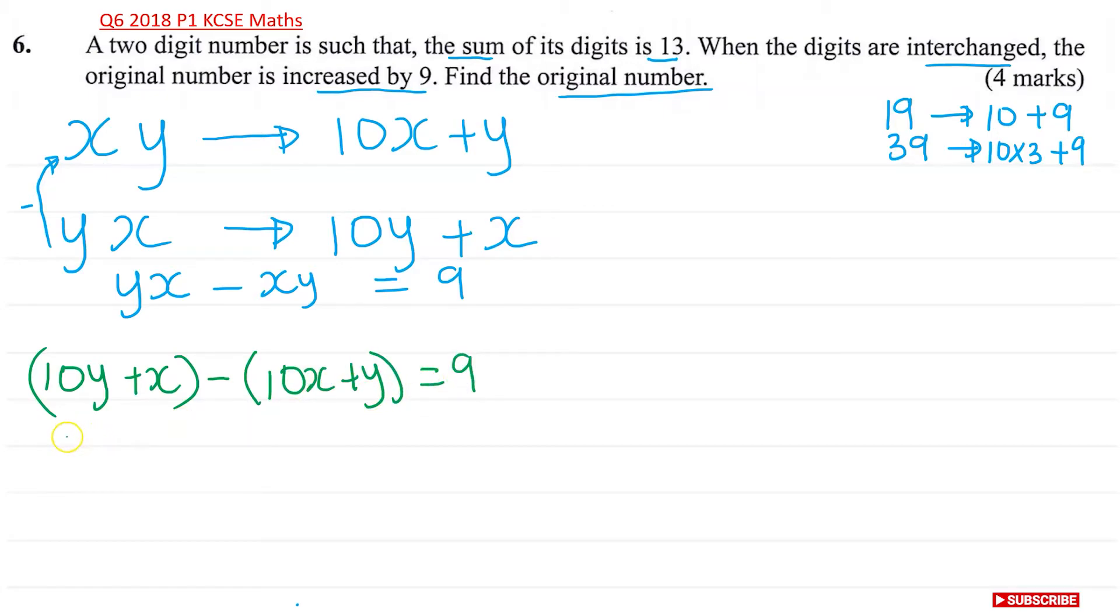So I'm going to take this out of the bracket. Then I will get 10Y plus X minus 10X minus Y is equal to 9. Because I have a minus here, everything here becomes a minus. So 10Y take away Y is 9Y plus X minus 10X. That's minus 9X. And then that's equal to 9.